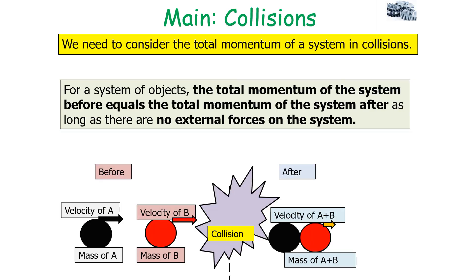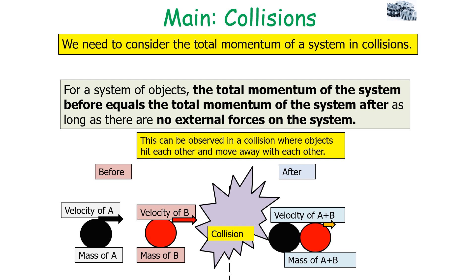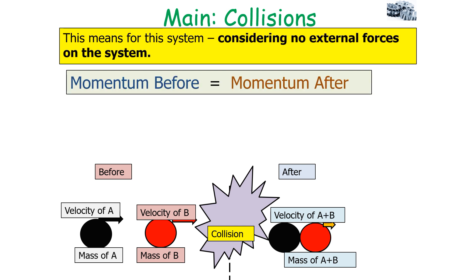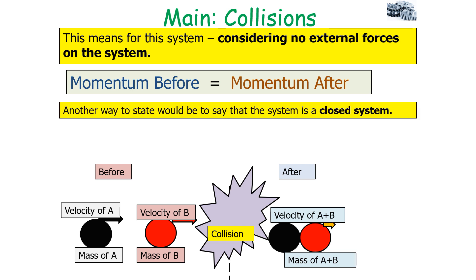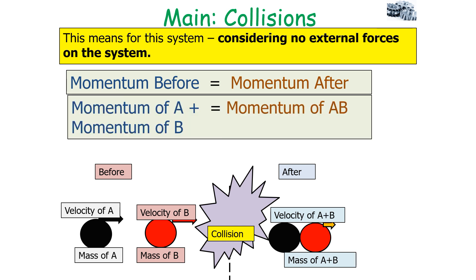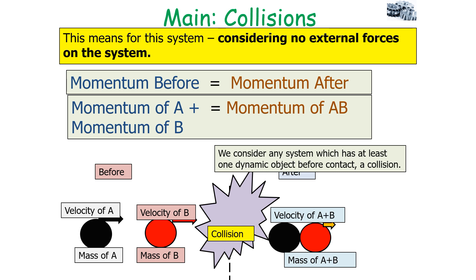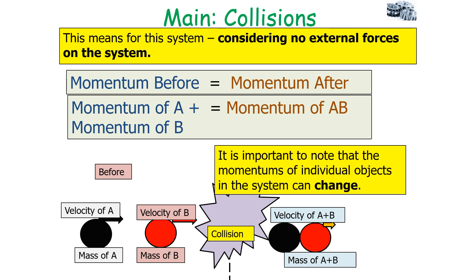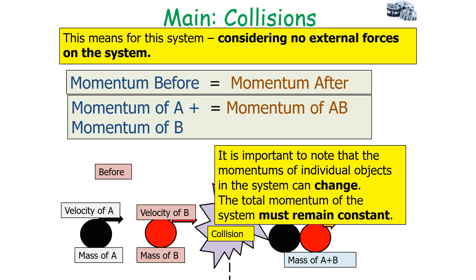We need to consider the total momentum of systems in a collision. Here we can observe a collision where objects hit each other and then move away. The total momentum before equals the total momentum afterwards. Because there are no external forces acting, this is a closed system. The momentum of A plus the momentum of B equals the momentum of AB after the collision. The momentum of individual objects in the system can change; however, the total momentum of the system must remain constant.